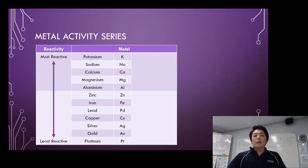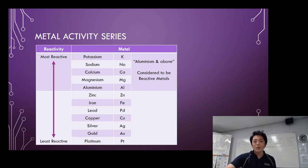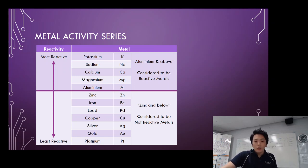Now metal activity series also provides information about what's considered to be reactive metals and what's not reactive. The line that you need to draw is under aluminium. Aluminium and above in the reactivity series is considered to be reactive metals, and zinc and below they are considered to be non-reactive metals.